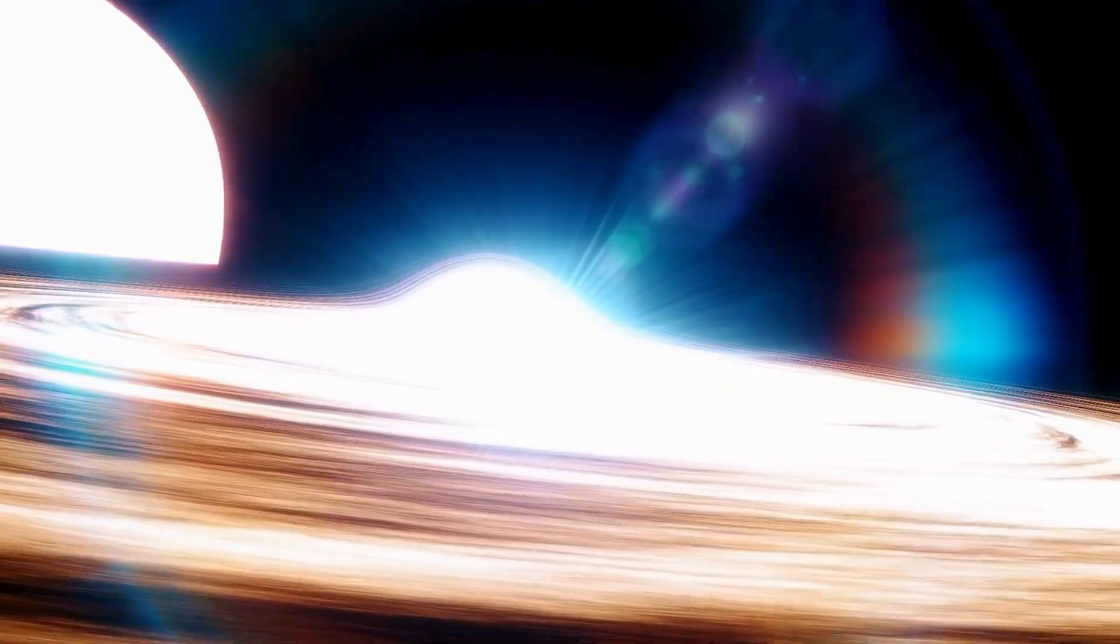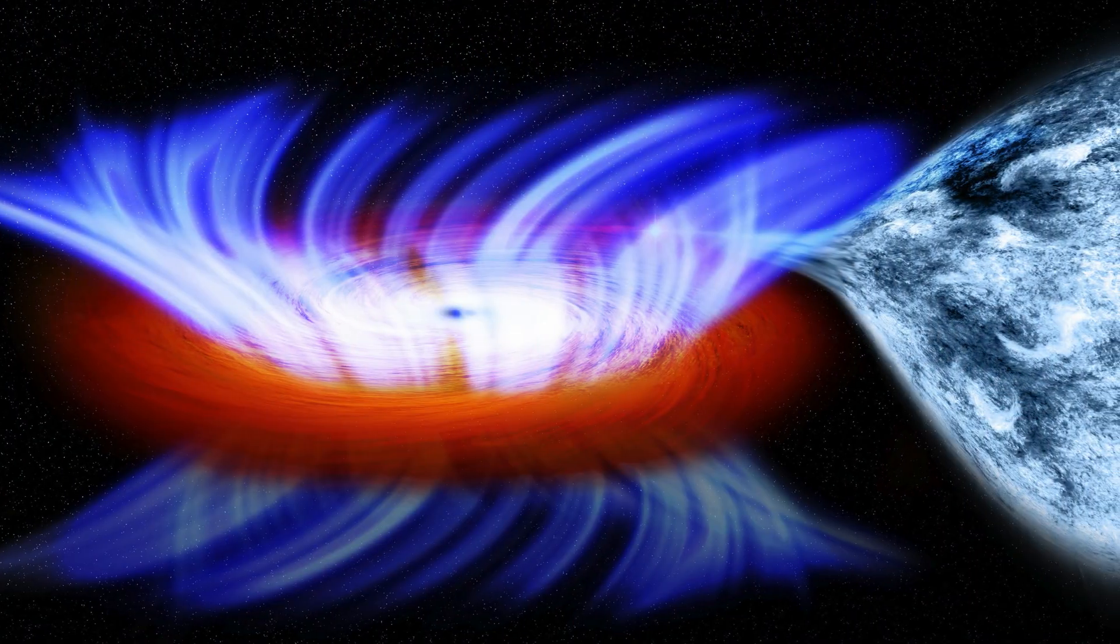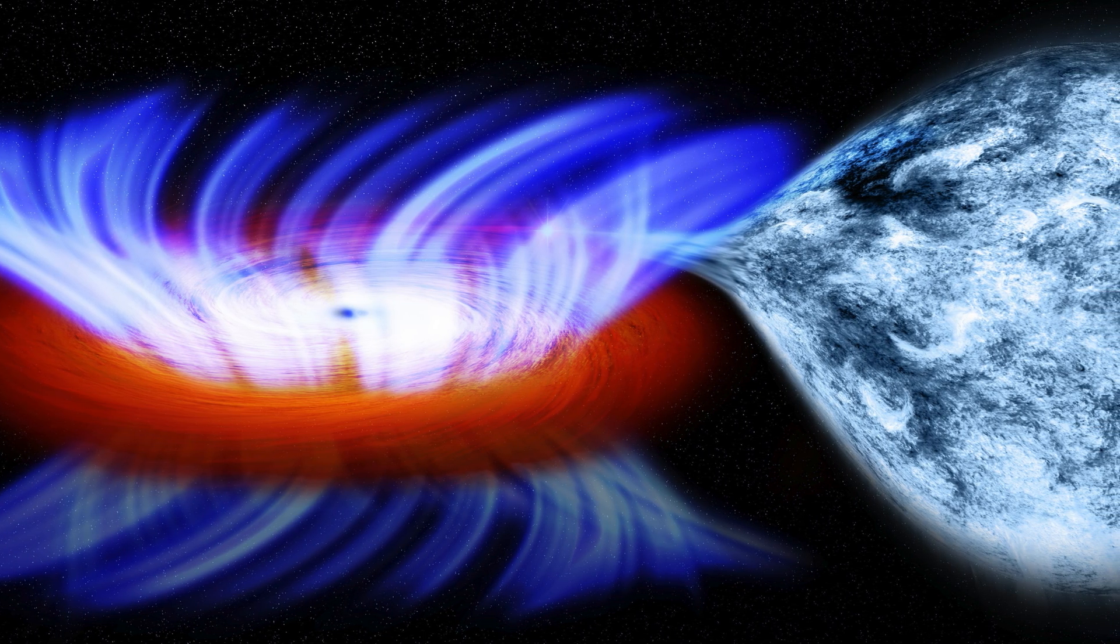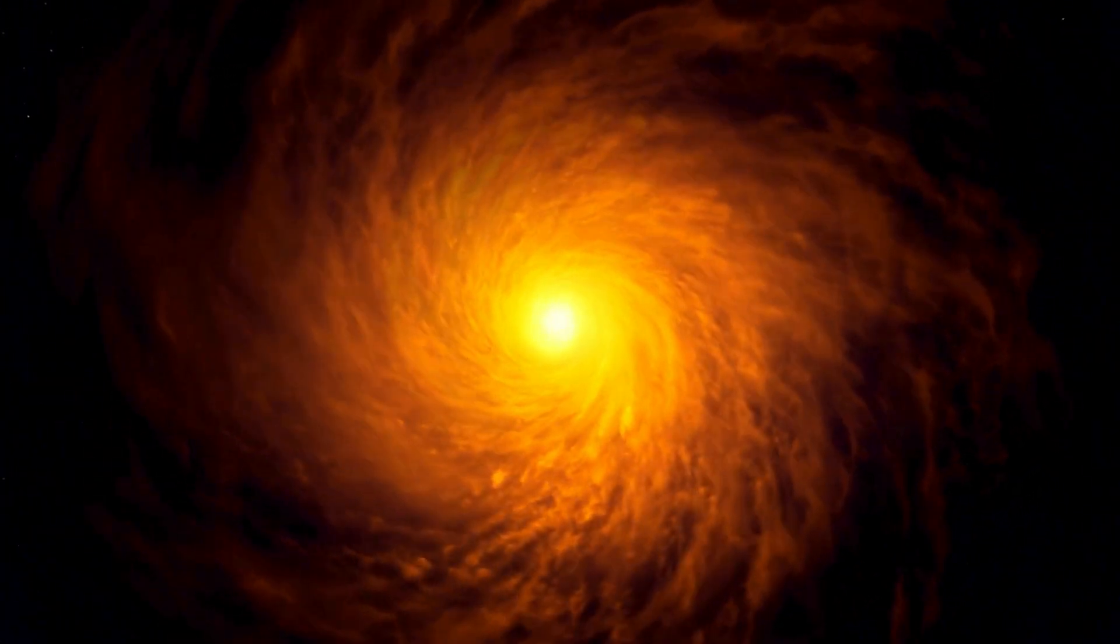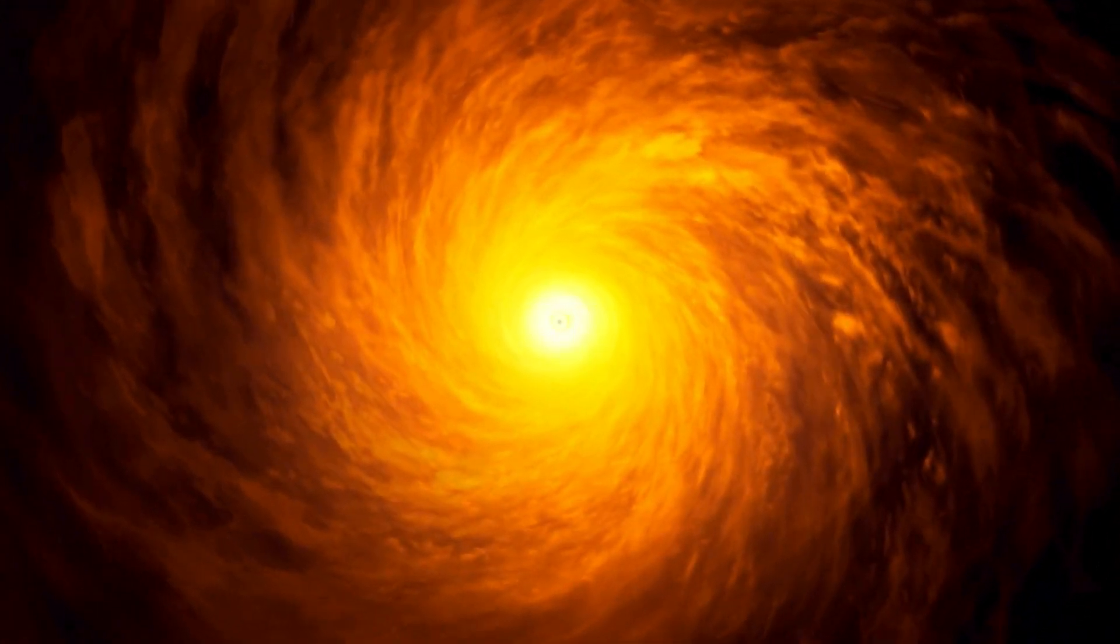These black holes aren't just massive, they also come with an immense gravitational pull. The event horizon is the boundary around a black hole beyond which nothing can escape, not even light. Surrounding this is the accretion disk, a swirling mass of gas and dust being pulled into the black hole.